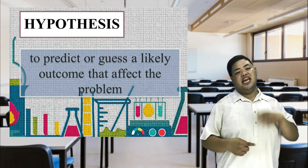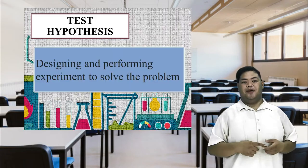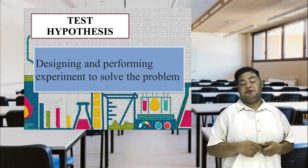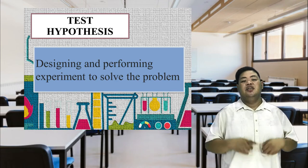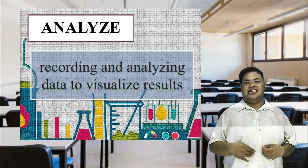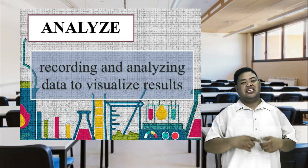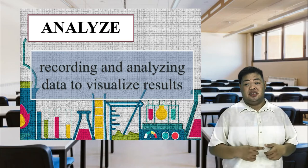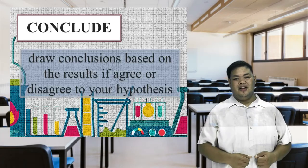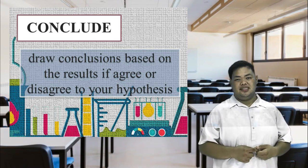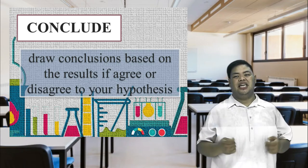A hypothesis often is stated in a cause-and-effect manner. Test hypothesis — designing and performing an experiment to solve the problem. After a hypothesis has been formulated, it is tested. To test a hypothesis, a scientist performs an experiment. Analyze — recording and analyzing data to visualize the result. Once your experiment is complete, you collect your measurements and analyze them to see if they support your hypothesis or not.